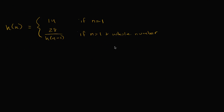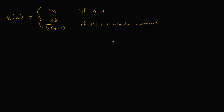Let's do a few more examples. So we have this function here — let's say it defines a sequence. Let's think about what the first four terms of that sequence are. I encourage you to pause the video and figure that out. So h of one — they very clearly tell us that's going to be 14. If n is equal to one, h is 14.